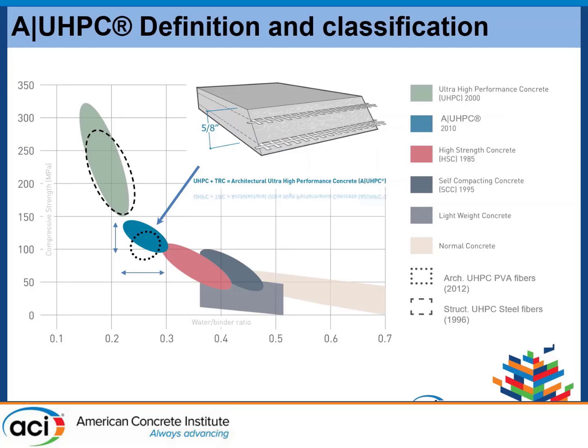Looking at a summary of all concrete types, you have high-performance self-compacting concrete, high-strength concrete, and formal ultra-high-performance concrete reinforced with steel fibers, normally in the 150 MPa range. Architectural UHPC sits in the gap between high-performance concrete and formal UHPC, mainly because it is reinforced with non-metallic fibers. For architectural purposes, there are aesthetic issues with fiber corrosion at the surface. The most common fiber used is polyvinyl alcohol, though in our case we use alkali-resistant glass fiber.